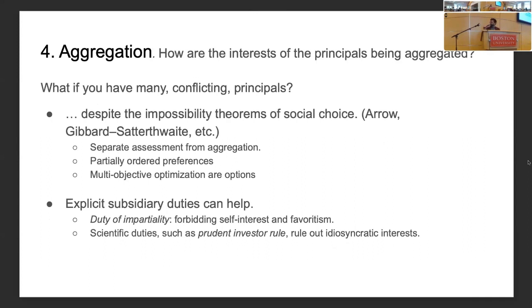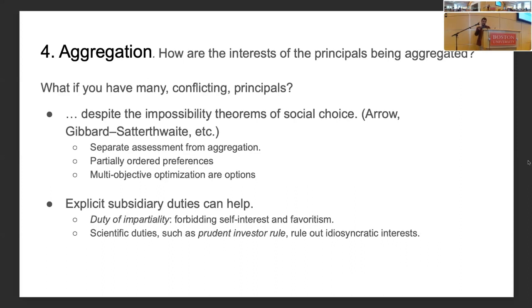Step four is aggregation: how do you aggregate many different conflicting principals' interests? There are pesky impossibility theorems in social choice, but we try to separate segmentation from aggregation to make it as little like voting as possible. You can use partially ordered preferences and multi-objective optimization. There is also input from legal precedent — this is not a new problem. Trustees have had multiple beneficiaries before, which is why there are subsidiary duties of impartiality, balancing self-interest and other considerations. Some subsidiary duties also incorporate scientific or quantitative standards of best interest or care, which can help iron out idiosyncratic interests that might disrupt aggregation.